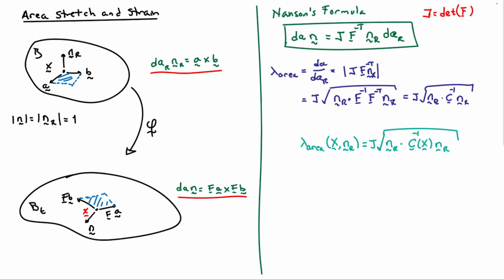We come to a final result here for the area stretch. It depends on the position and on the orientation of the area that you're looking at. It's equal to j times the square root of nr dot c inverse of X dot nr. The j here is also a function of capital X, so it depends on the point you're looking at by way of j and c inverse, and the orientation of the area by way of nr.